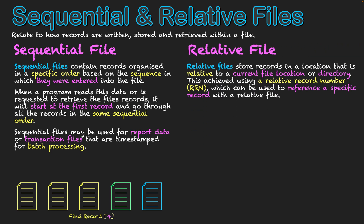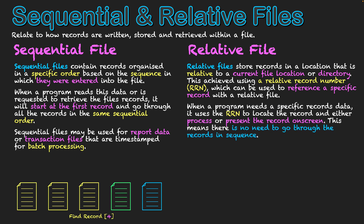A relative file is different because it stores records in a location that is relative to another file location, or directly. This is achieved using a Relative Record Number (RRN), which is used as a reference point — applying a number to each record so we can type that in and find specific records. Think of it like a primary key or ID field. When a program needs a specific record's data, it uses the RRN to locate and either process or present the record on screen straight away, without going through all records in sequence.